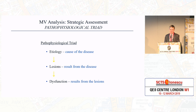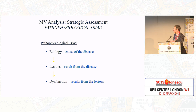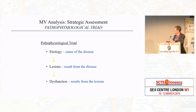The important thing to look at when talking about the mitral valve is the pathophysiological triad, which includes etiology, lesions, and dysfunction. Etiology is essentially the cause of the disease. Lesions are what result from the disease, and dysfunction is what results from the lesions. So we're trying to fix the dysfunction that is a consequence of the lesions that occur because of the etiology.